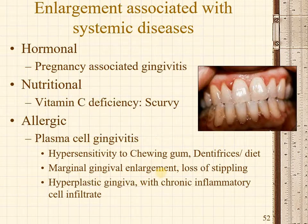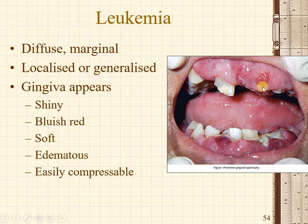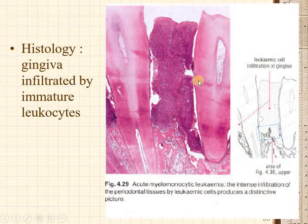This type of gingival enlargement is called plasma cell gingivitis, seen in the marginal gingiva and associated with hyperplastic gingiva and chronic inflammatory cell infiltrate. Leukemia is the most common neoplastic enlargement seen in the gingiva. The gingiva is described as boggy, showing a shiny bluish-red color because of congestion of blood vessels filled with immature lymphocytes. It is soft, edematous, easily compressible and associated with poor oral hygiene. Histologically, the gingival tissue is accumulated with immature leukemic cells causing congestion and bluish discoloration.